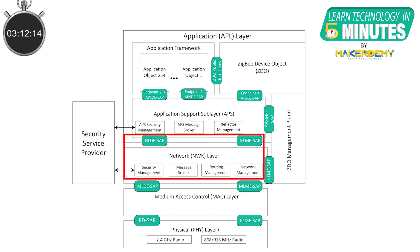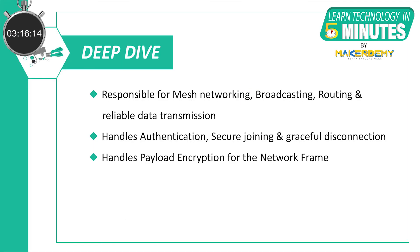The next layer above the MAC layer is part of the Zigbee specification. The network layer is responsible for mesh networking, broadcasting packets across the network, determining routes for the packets, and making sure packets are sent reliably from one node to another. The network layer also has a set of commands for security purposes, like for secure joining and rejoining. Zigbee networks are all secured at the network layer and the entire payload of the network frame is encrypted. In short, the network layer takes care of all network-related operations.